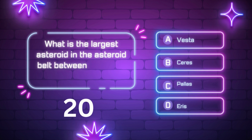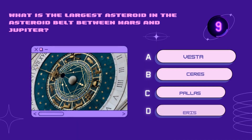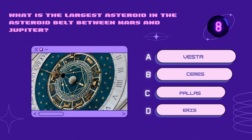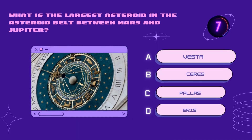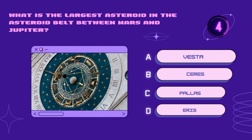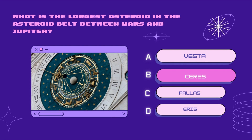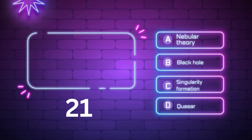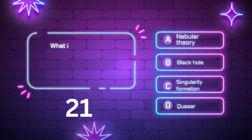What is the largest asteroid in the asteroid belt between Mars and Jupiter? Vesta, Ceres, Pallas, Eris. Your time starts now. Right answer is Ceres.